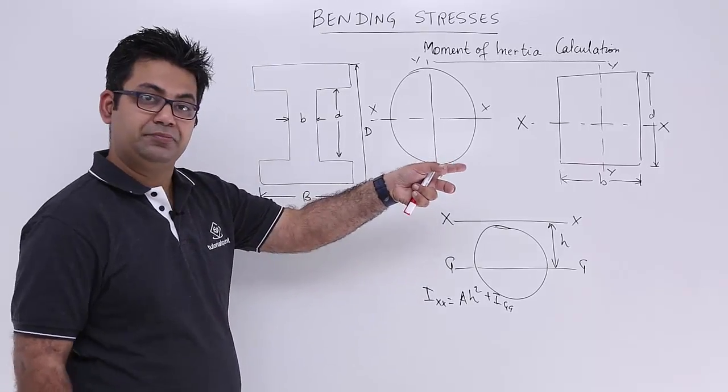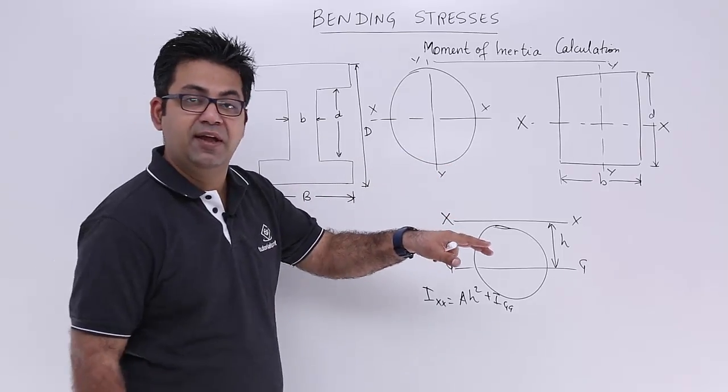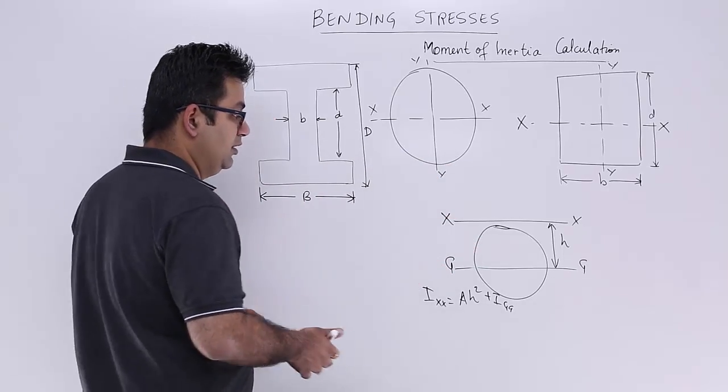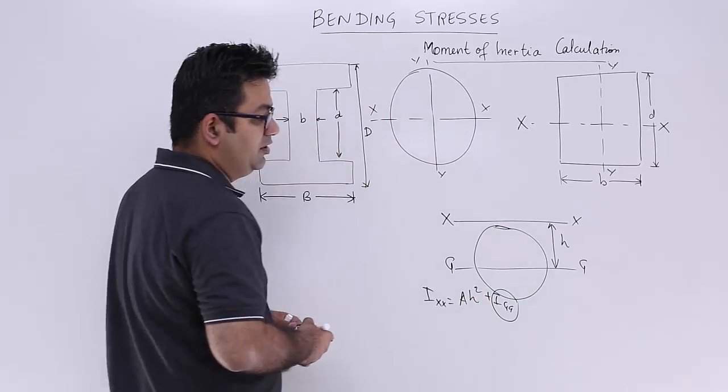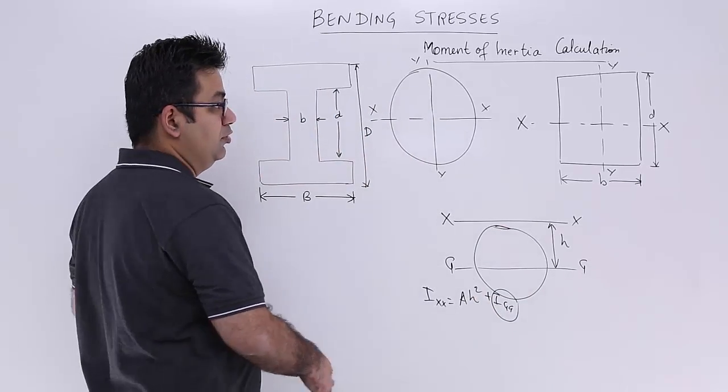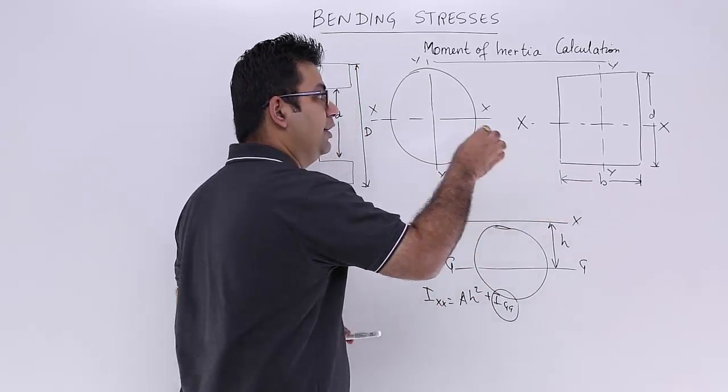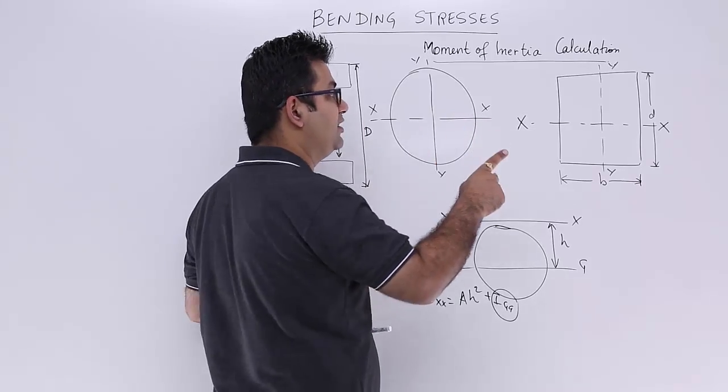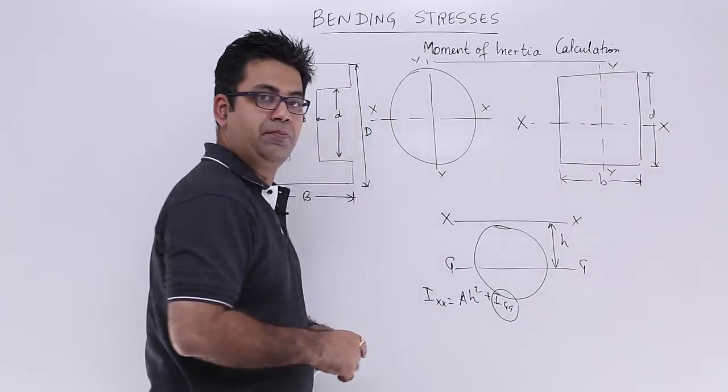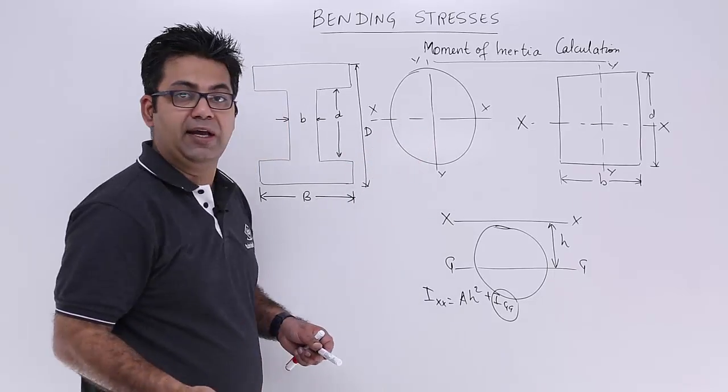So in this case, in all these three cases, we are finding out the moment of inertia about the centroidal axis. So for this kind of section, that is the rectangular section, you have two axes, one is xx and one is yy. So both are centroidal axes.